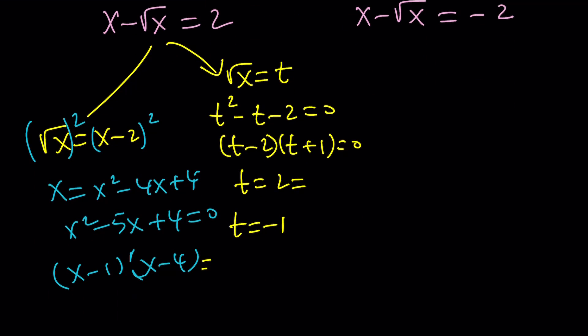Now, the advantage of the second approach, sub-approach, is basically you don't get these extraneous solutions because from here, you're going to get x equals 1 and x equals 4. But here, when t is 2, when t is square root of x, by the way, you immediately know that square root of x equals negative 1 is not going to work because if x is real, that is not going to work. How about x being complex? Think about it.